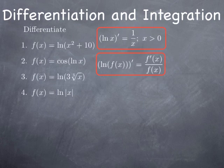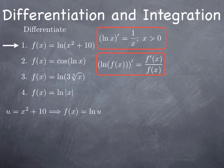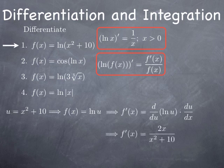For the first example, differentiating ln(x² + 10): it's of the form ln(u) where u = x² + 10. We obtain u′/u, so the derivative of x² + 10 is 2x, divided by x² + 10. The result is 2x over x² + 10.